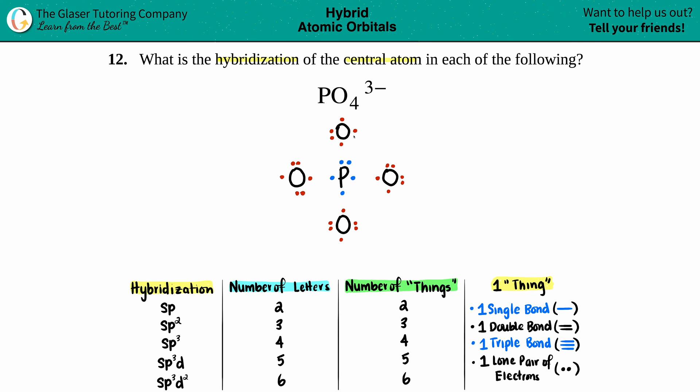So now what does this 3- mean? Remember, the 3- means that you gained three electrons. So I usually put them in my outermost elements, a.k.a. the most electronegative, because they're the ones that are more likely to gain those electrons. So I'll put one on this oxygen, I'll put one on this oxygen, and I'll put one on this oxygen. There's your total of three.